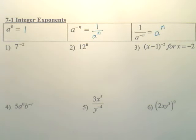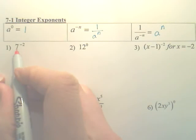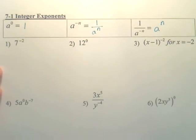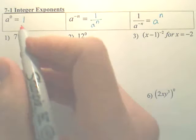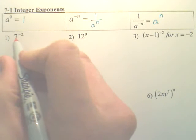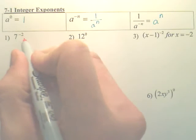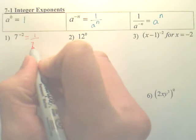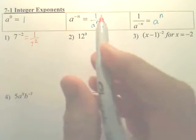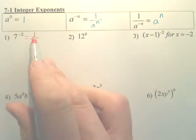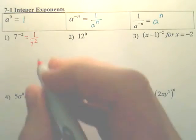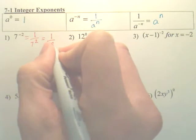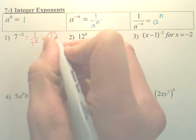Alright, so let's try some problems. If I have 7 to the negative 2, and if I want to solve that, what I'm going to do is I am first going to change that to 1 over 7 squared. I use this property right here. Now, from here, it's real simple. That would end up being 1 over 49. That's your answer. Remember, all negative powers flip and then drop the negative.